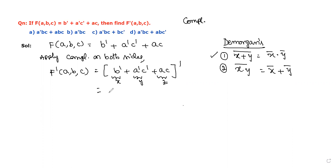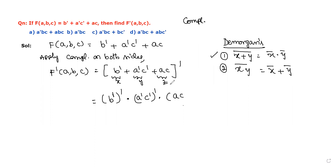We have three products, so think of them as x, y, and z. Applying the first De Morgan's law: x' means (b')' dot y' means (a'c')' dot z' means (ac)'. So this becomes (b')' · (a'c')' · (ac)'.